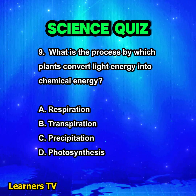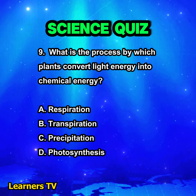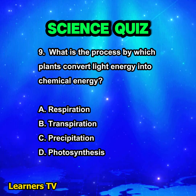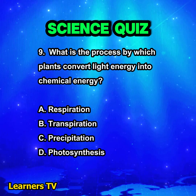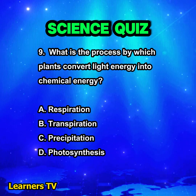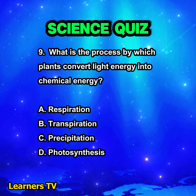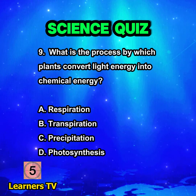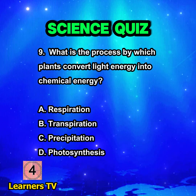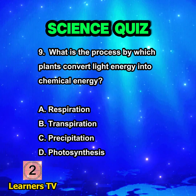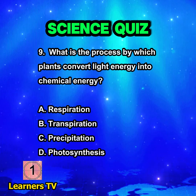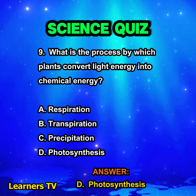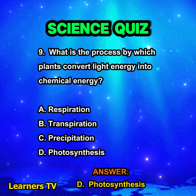What is the process by which plants convert light energy into chemical energy? A. Respiration. B. Transpiration. C. Precipitation. D. Photosynthesis. The answer is D. Photosynthesis.